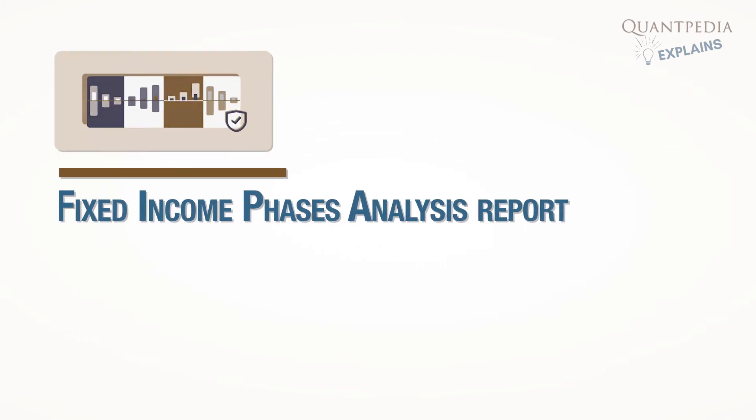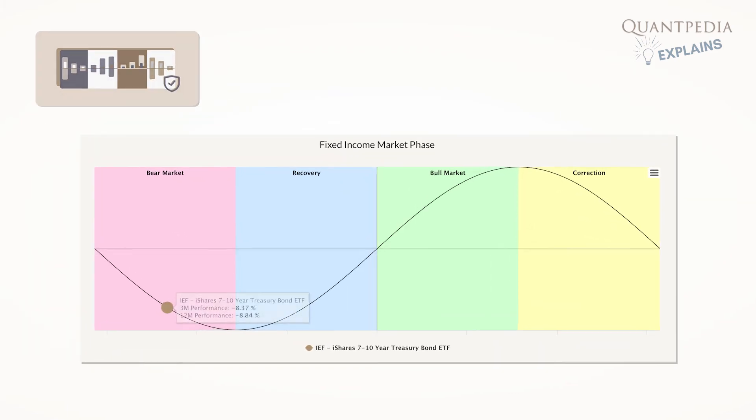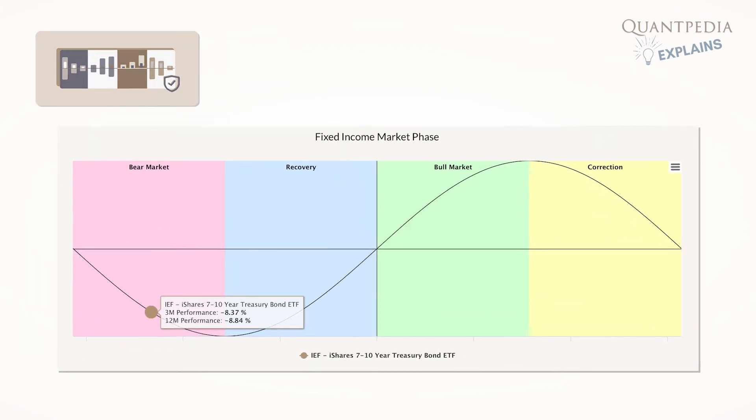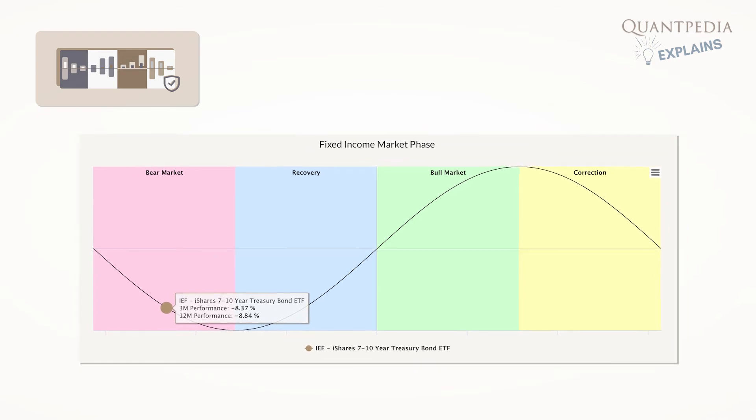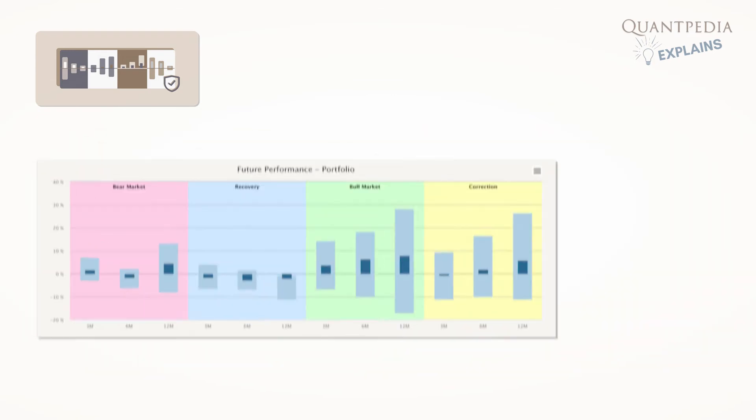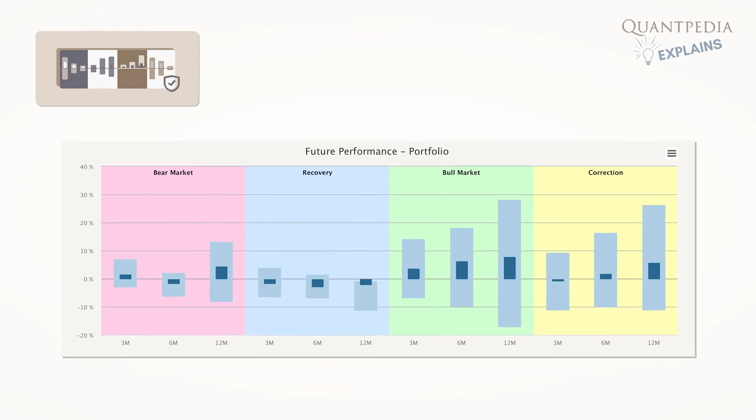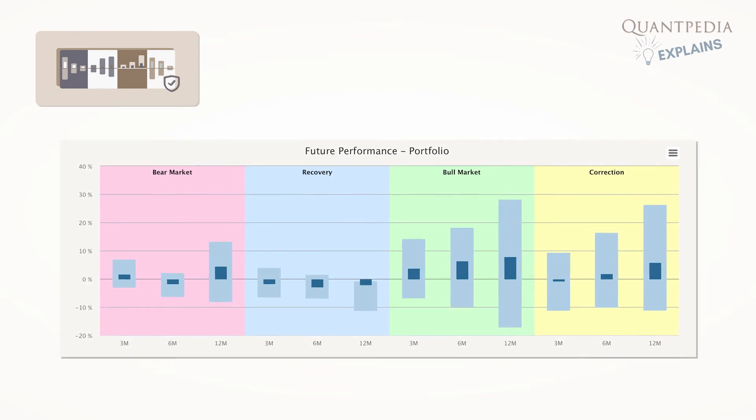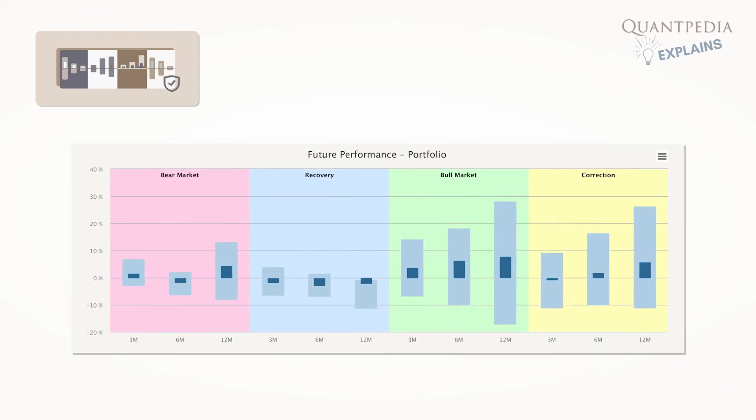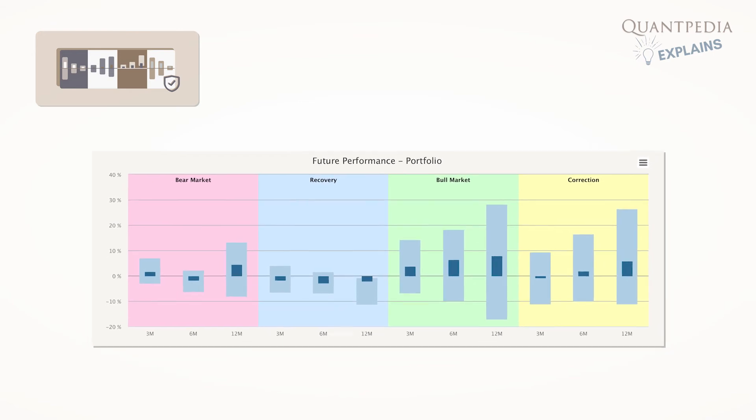Fixed Income Phases analysis report uses IEF ETF, iShares 7-10 year Treasury Bond ETF, a proxy for the U.S. government bonds. Again, Quantpedia clients can investigate the past 12 months and future average performances 3, 6, and 12 months of benchmarked ETF and model portfolio in each fixed-income market phase.